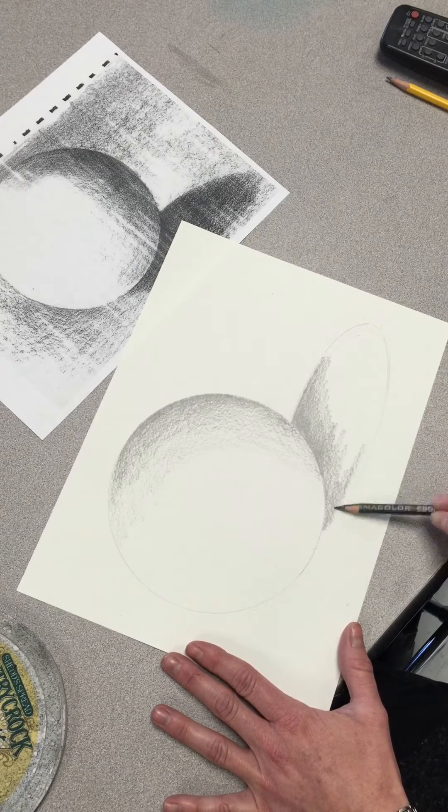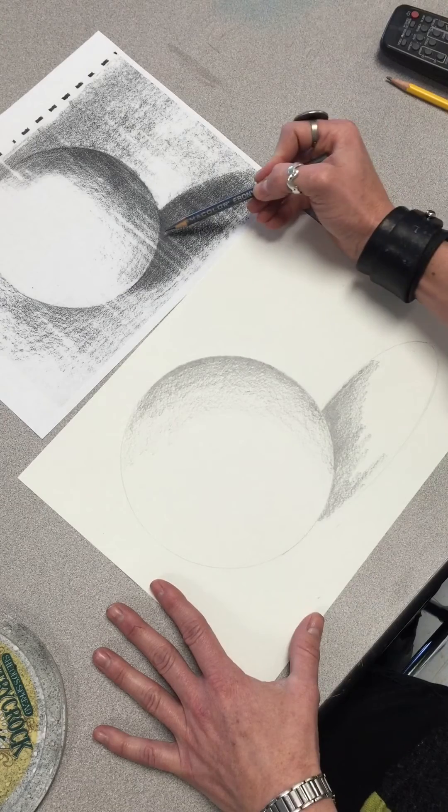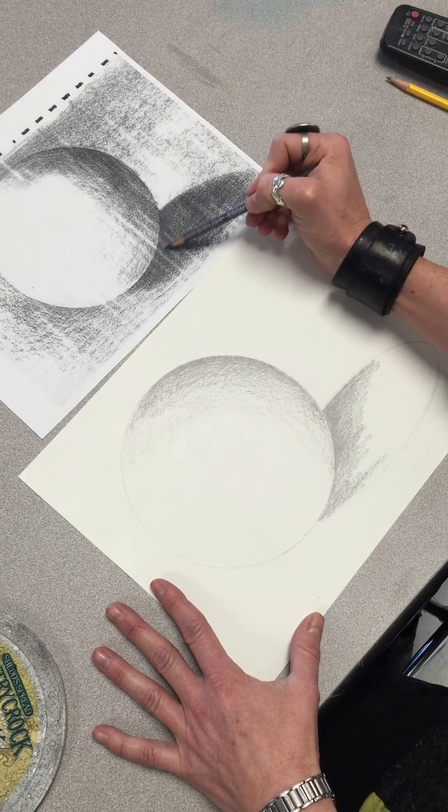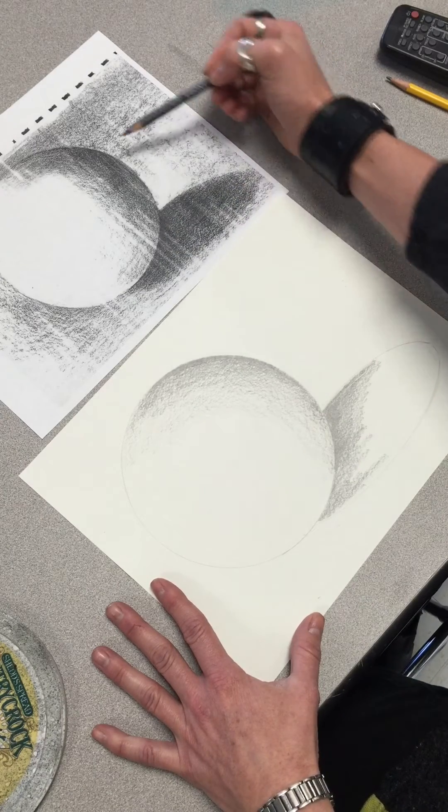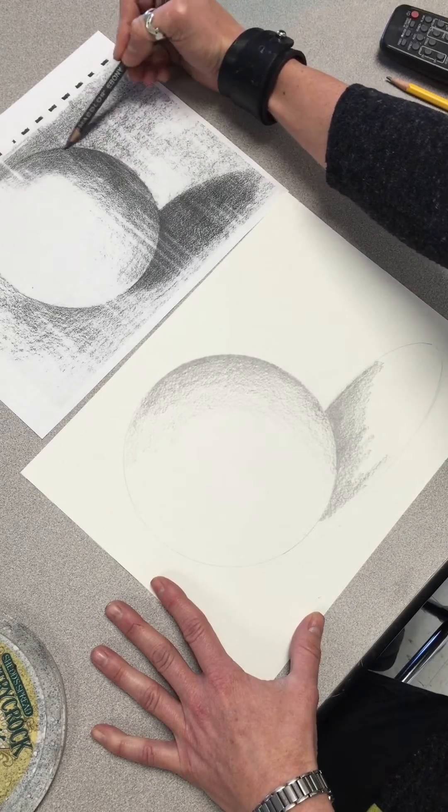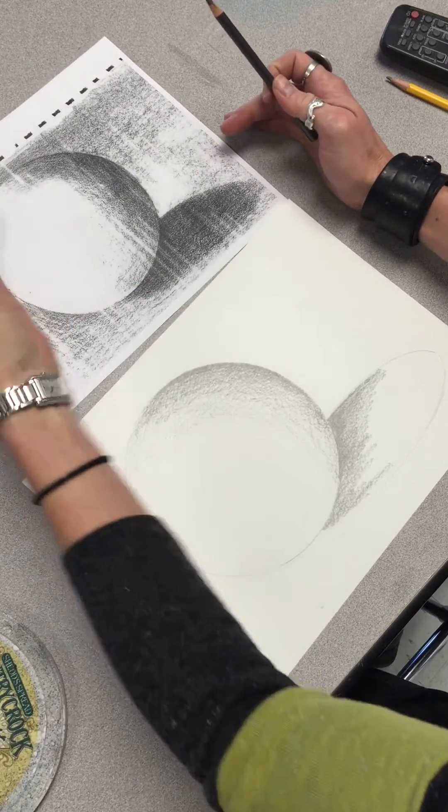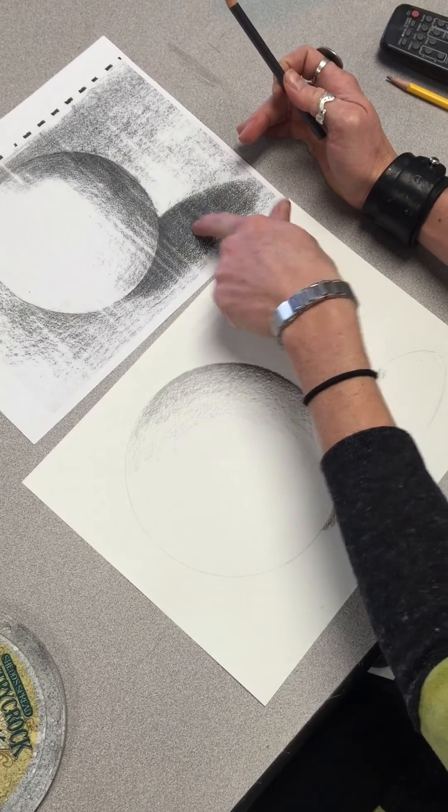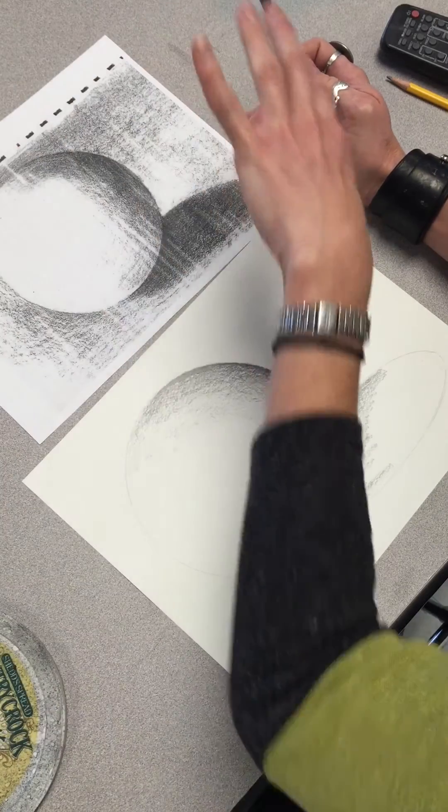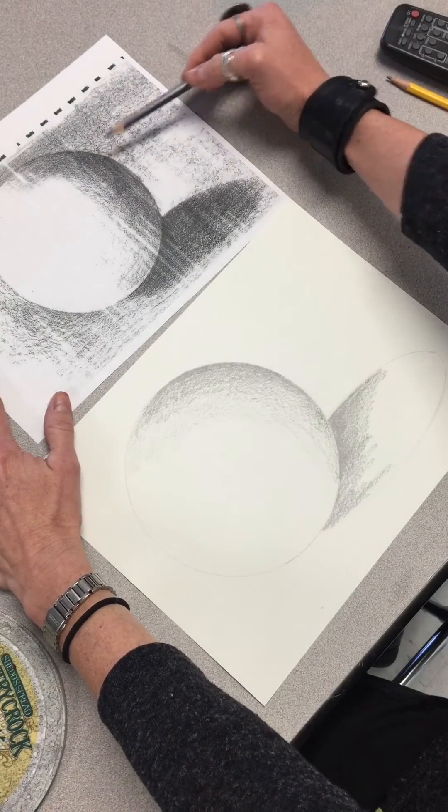Now my sphere is really starting to take shape. My value on my drawing needs to be as dark as this here, and you want it to be really dark up here because the light is shining from the left and it's casting a shadow on the table. So as the light goes around, it's slowly getting darker.